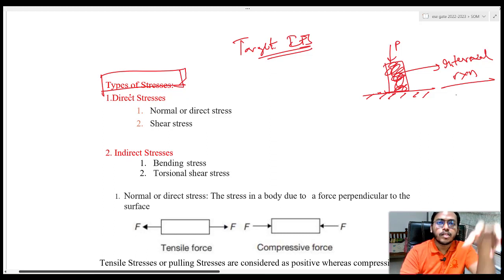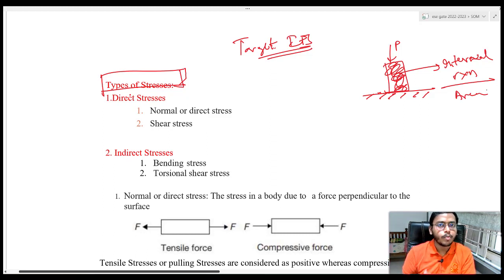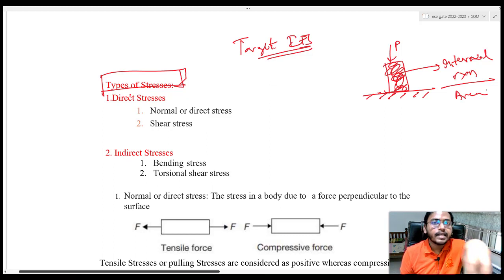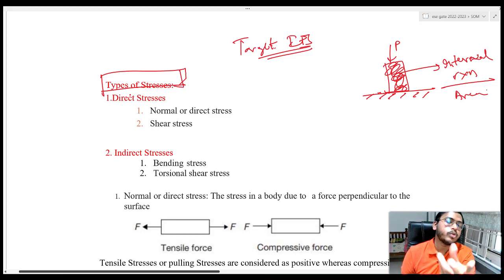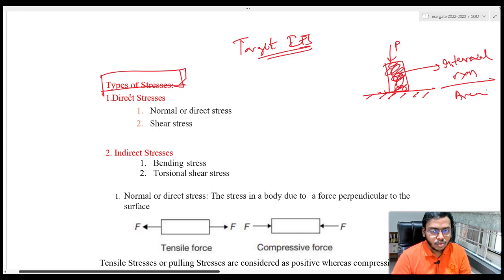This internal reaction being developed in my body per unit area — I am calling it as stress. Total internal reaction per unit area. So you can just divide the force, whatever is acting, divided by area, and you will be getting your stress. Stress is nothing but the internal reaction being developed within my body per unit area — how much internal reaction is developed in a particular unit area, that is nothing but stress.